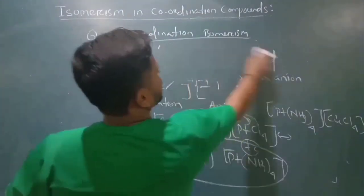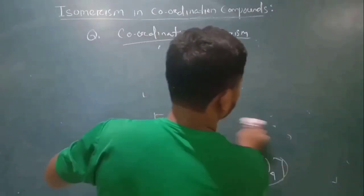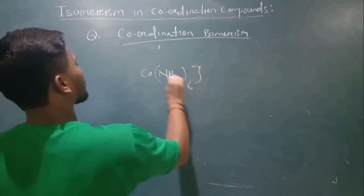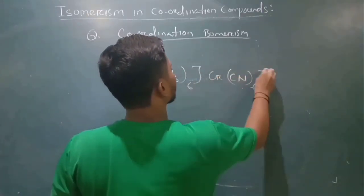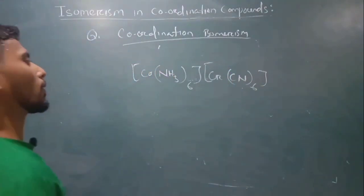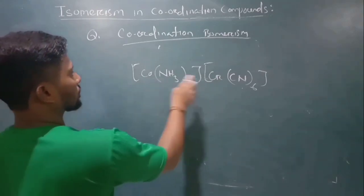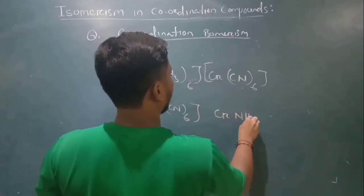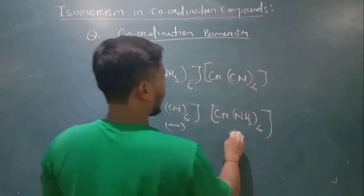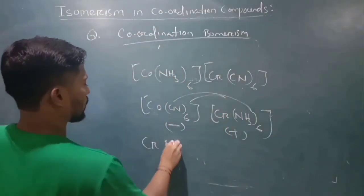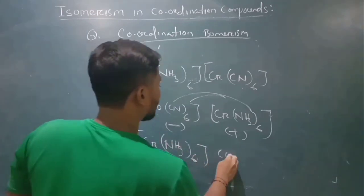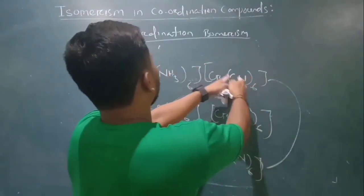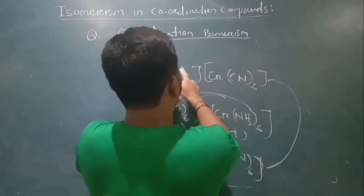Another example: [Co(NH3)6][Cr(CN)6]. If you interchange, you can put NH3 with chromium and CN with cobalt, giving you [Cr(NH3)6][Co(CN)6]. This demonstrates coordination isomerism where complex cation and anion exchange ligands.